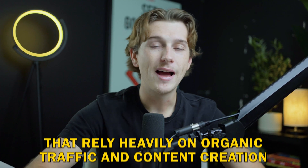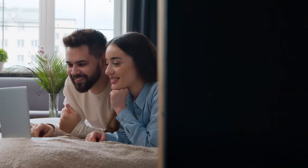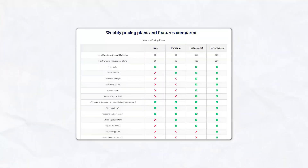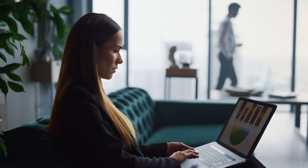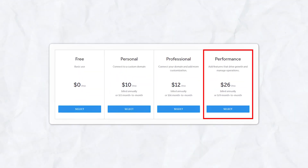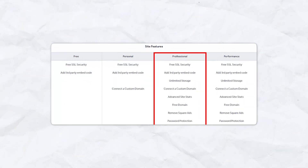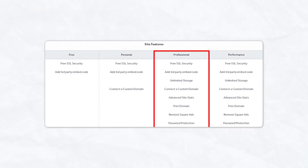Now let's dive into the pricing plans. When it comes to pricing, Weebly offers more budget-friendly options, making it an appealing choice for individuals and small businesses with limited budgets. Weebly provides a free plan that allows users to build a website with Weebly branding and basic functionality, ideal for personal sites or small projects. For users looking for more features, Weebly offers three paid plans: a personal plan at about $10 a month, a professional plan at $12 a month, and a performance plan at $26 a month. The professional plan is particularly attractive, offering users the ability to connect a custom domain, remove ads, and access essential e-commerce features at a relatively low cost.